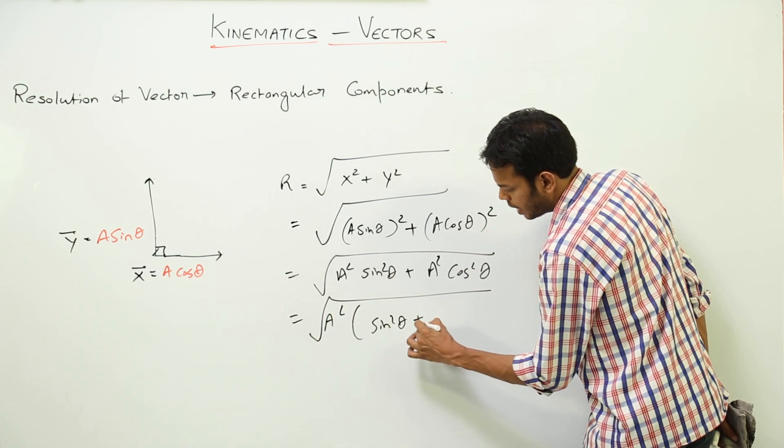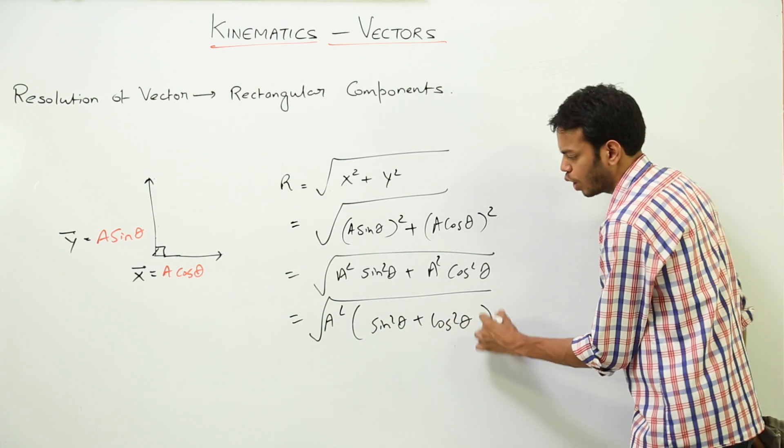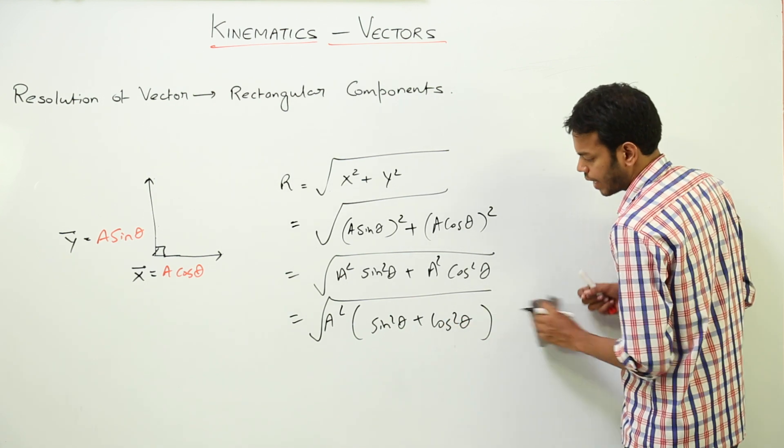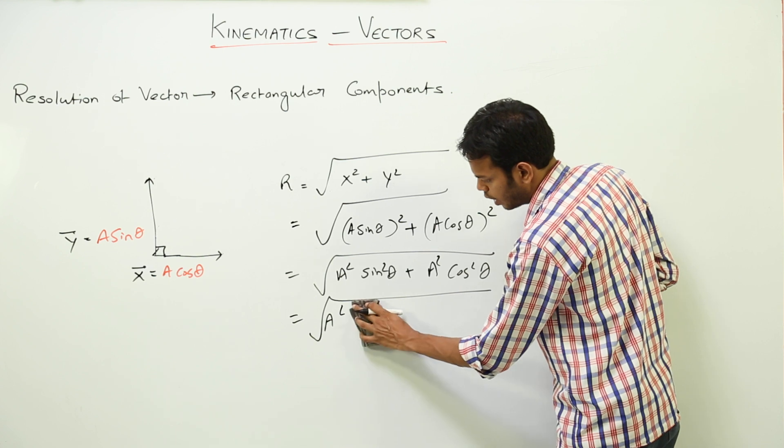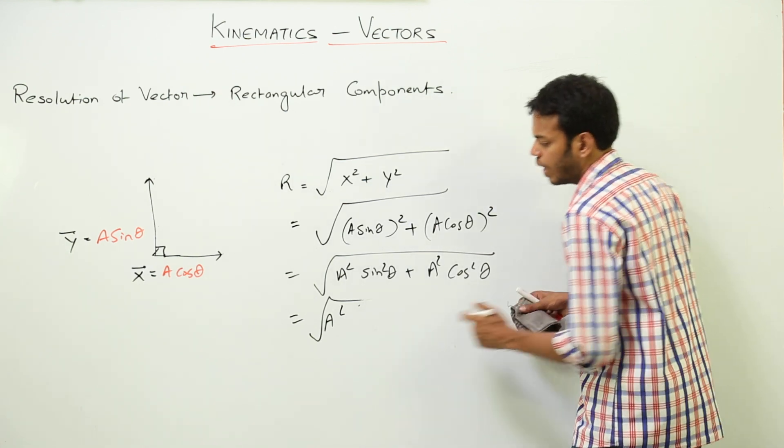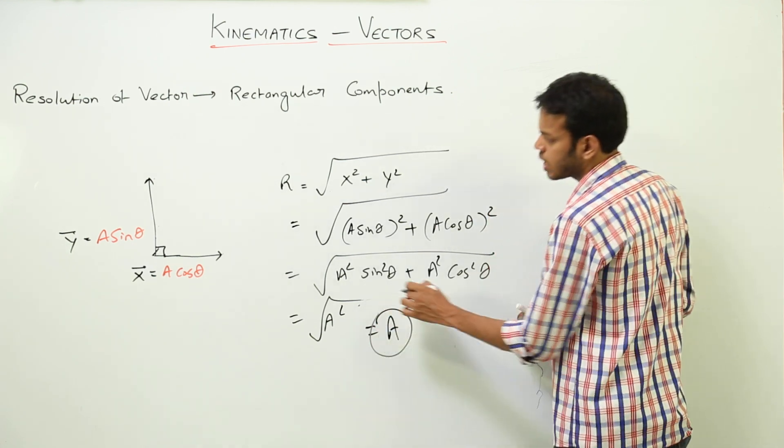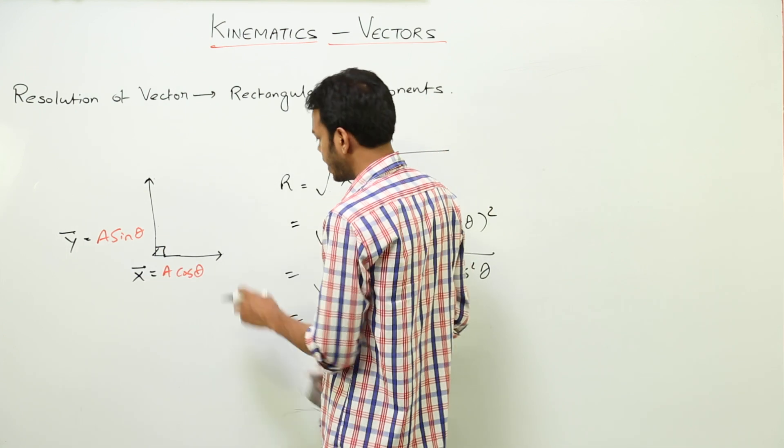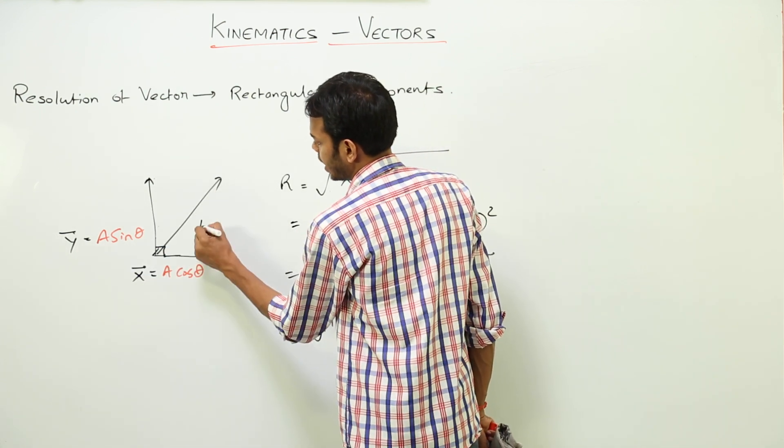What is sin square theta plus cos square theta? It is 1. So this whole thing is 1. You are left with under root A square, which is A. So resultant of these two vectors is back the same vector in the same direction A.